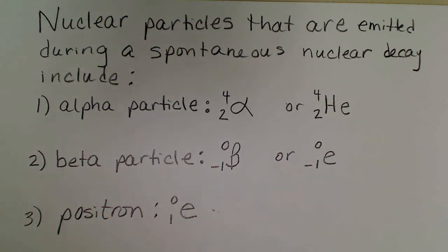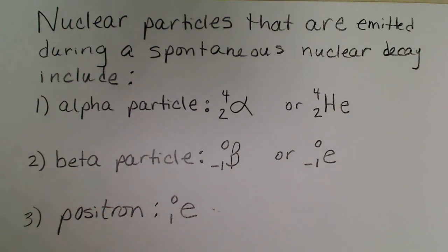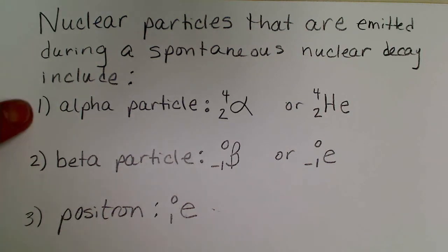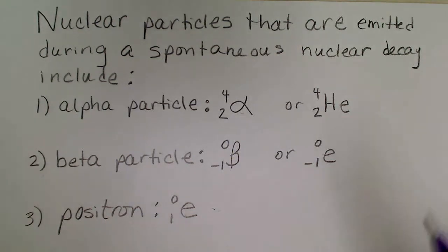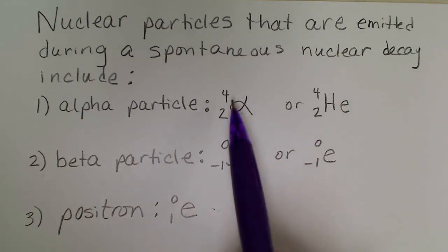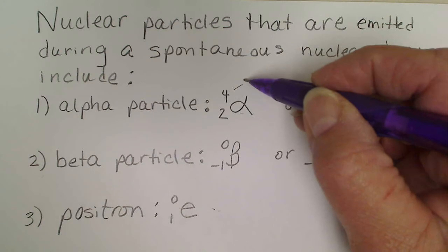In this video we are going to first consider the particles that are emitted during a spontaneous nuclear reaction. These are sort of in alphabetical order according to the Greek alphabet. One type of particle that's emitted is an alpha particle, and the Greek letter for alpha is this symbol. Since the mass number is 4 and the charge is 2 on this particle...